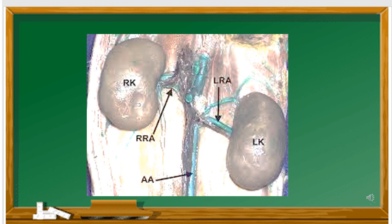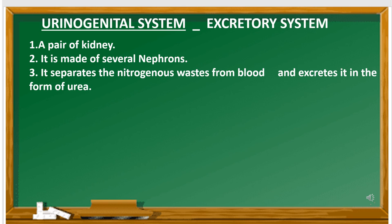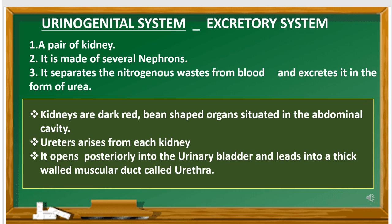Next is the urinogenital system, which comprises the urinary or excretory system and the reproductive system. The excretory system has a pair of kidneys, made up of several nephrons. It separates waste from the blood and excretes it in the form of urea. The kidneys are red bean-shaped organs situated in the abdominal cavity. From the kidney arises the ureter, which opens into the urinary bladder and leads into a thick-walled muscular duct called the urethra.